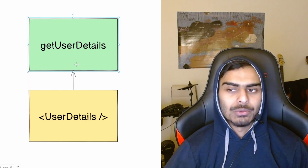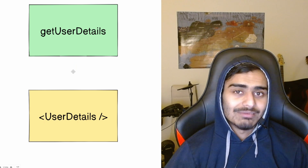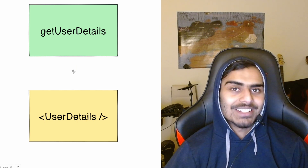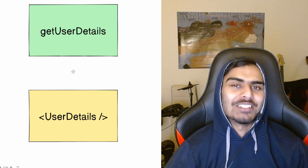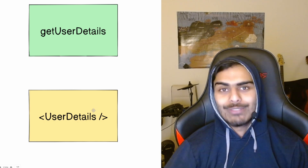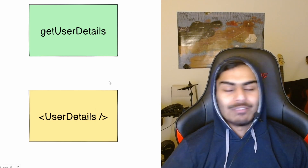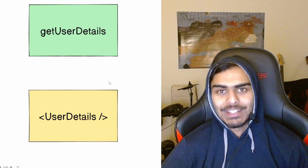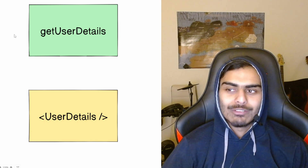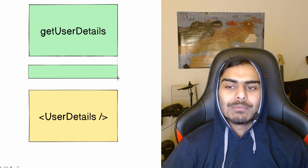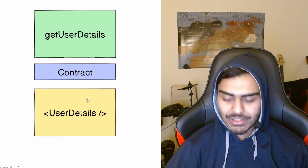If we want to decouple these two functions, all we have to do is pull them apart and remove the arrow. Good news: they're no longer coupled and you can change them independently. Bad news: the UserDetails component has no way of getting the user details to show on screen. You can decouple everything by having nothing talk to anything else, but then your code won't be useful.